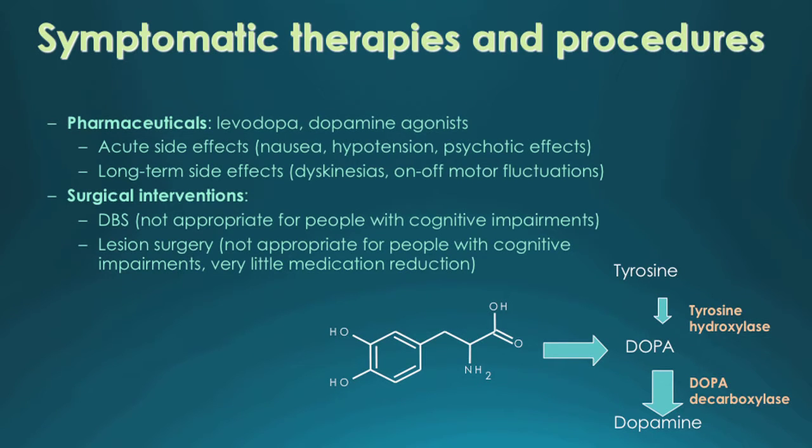It's worth mentioning that beyond these four cardinal symptoms, there are a range of other symptoms that can arise in Parkinson's. These can include neuropsychiatric symptoms, autonomic nervous system changes, sleep disturbances, and sensory phenomena. So any intervention we're talking about for Parkinson's needs to consider not just its ability to affect the motor symptoms, but also the impact on this wide range of non-motor symptoms as well.